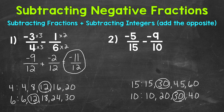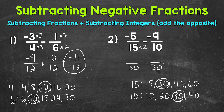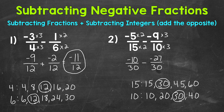I wrote out four multiples each for 15 and 10 and looked for the least common multiple. If you do not see a least common multiple as you write out your lists, you can always extend your list — I suggest writing four or five multiples and then going from there. Our least common denominator is 30. Now let's rename: how do we get 15 to equal 30? Multiply by 2 — negative five times 2 is negative 10. How do we get 10 to equal 30? Multiply by 3 — negative nine times 3 is negative 27. We now have equivalent fractions with a common denominator of 30 and are ready to subtract.